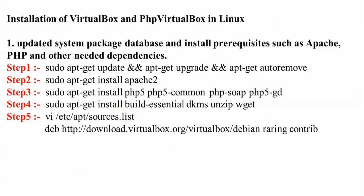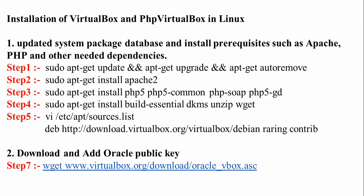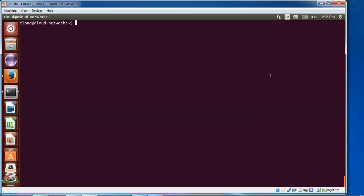We need to open the sources list and put in the line for downloading VirtualBox. After that we need to add the Oracle public key. Steps six and seven cover downloading and adding the Oracle public key. So let us begin. You need to use 'su' to log in as root.